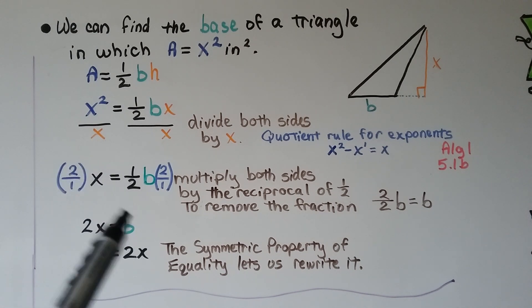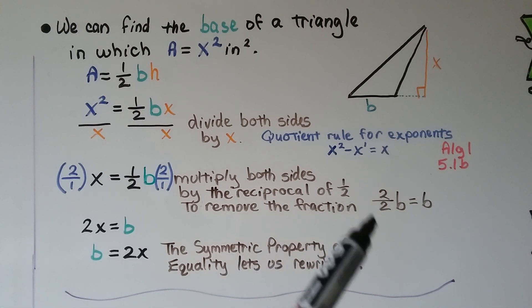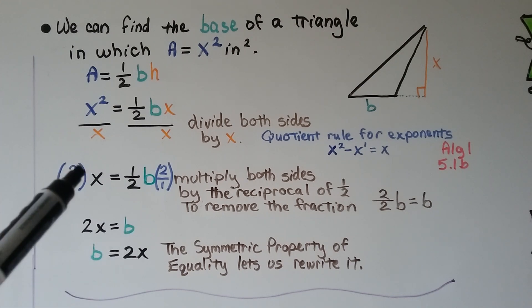Now we can multiply both sides by the reciprocal of this fraction, of this half, to remove the fraction. We would get 2 over 2b, which is just b on the right side, and we'd have 2x on this side. We can use the symmetric property of equality to rewrite it as b equals 2x. Just flip it around.